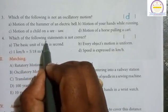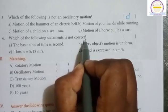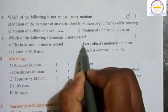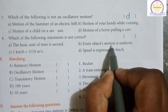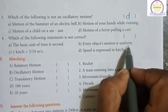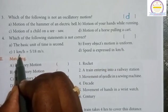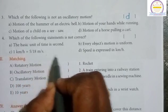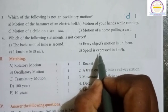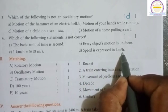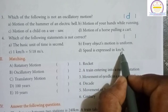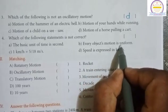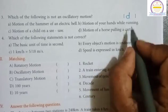Which of the following statements is not correct? a) The basic unit of time is second, b) every object's motion is uniform, c) 1 kilometer per hour equals 5 by 18 meters per second, d) speed is expressed in kilometer per hour. Yes, B: every object's motion is uniform. This is the wrong answer.